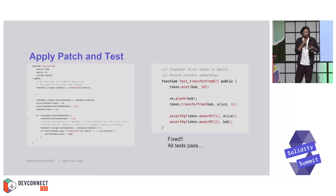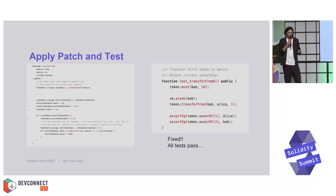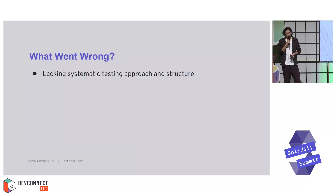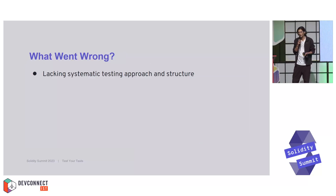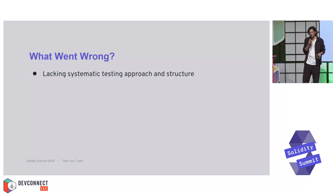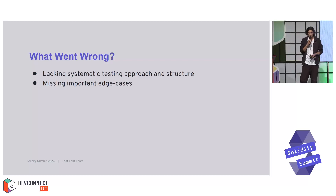I thought I had sufficiently tested it, but apparently I hadn't. I created a new edge case which caught the specific bug — it failed. I applied a patch, all tests passed. Except not quite, because I had introduced another bug. Reflecting on what was going wrong, I noted that I was lacking a systematic testing approach and structure. I was just randomly thinking of edge cases, neglecting the nuances of the actual implementation, and testing multiple things at once in one test.